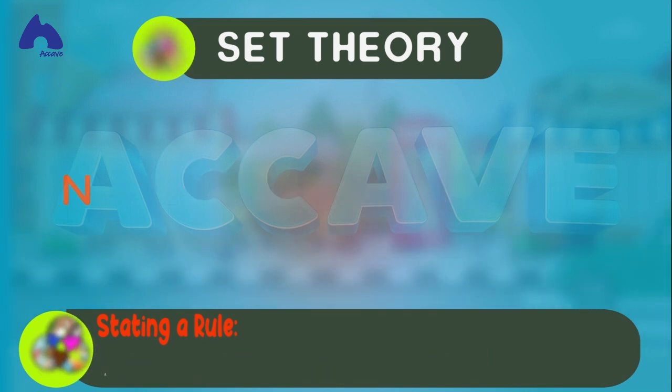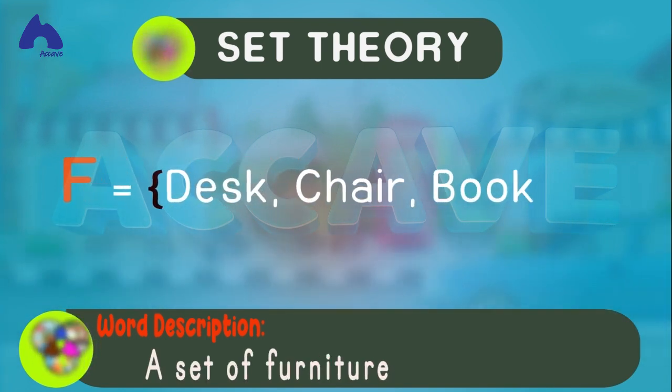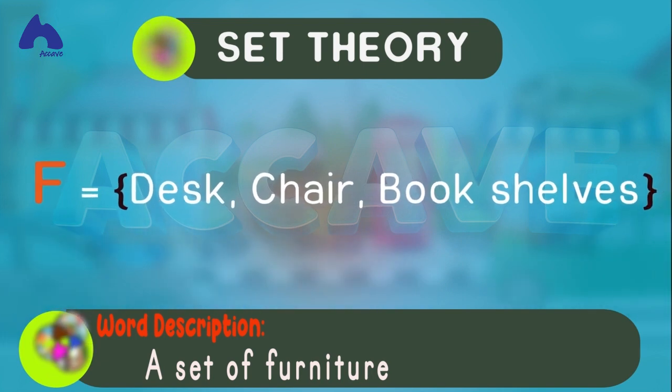It can also be described by simply a word description, for example, a set of furniture. So, set F would be equal to text, chair, bookshelves, because all these are furniture.